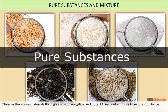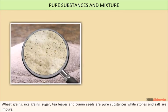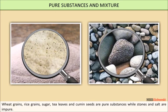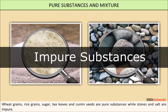Salt and stones are made up of more than one type of substance, so such substances are called impure substances or mixtures.